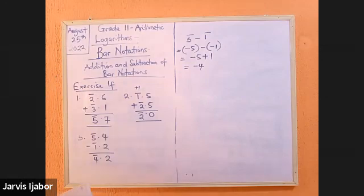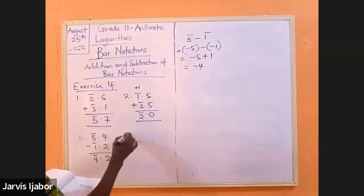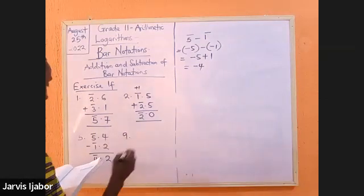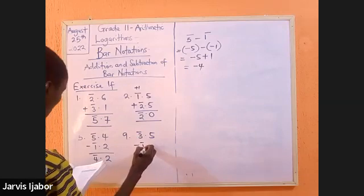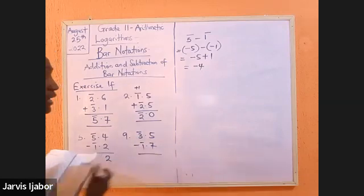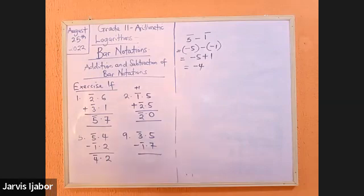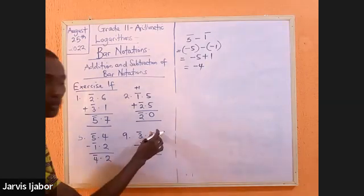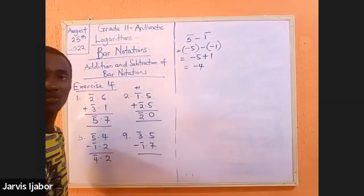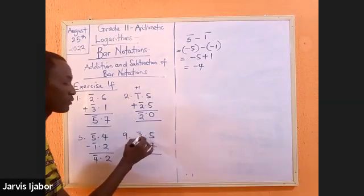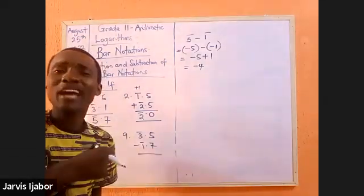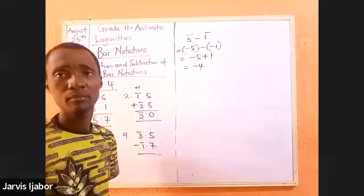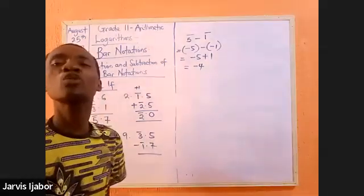Now, I want to go to a question that involves me having a carry. Let's look at question 9. We have bar 3.5 minus bar 1.7. This is where it becomes very tricky. 5 minus 7, it cannot. So, what do we do? We borrow from bar 3. I have to take from what I don't have means that I will now have less.